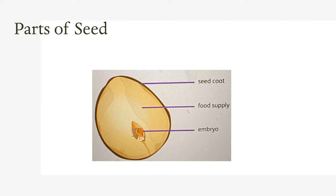Now we are going to discuss about the parts of a seed. A seed has three main parts: an embryo, which is a baby plant; a food supply for the embryo; and a seed coat, which protects the seed from damage.